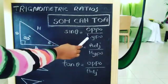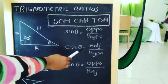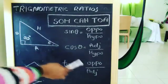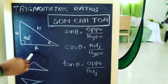So sin theta is opposite over hypotenuse, cos theta equals adjacent over hypotenuse, and tan theta equals opposite over adjacent.